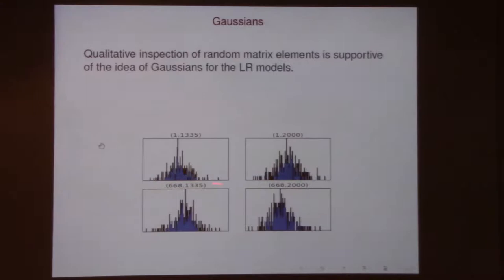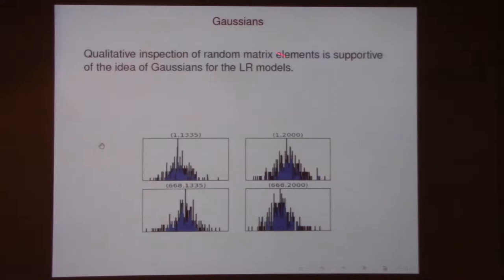Let's say you have matrices of size 2,000 by 2,000. Look at one particular (i,j) matrix entry and look at what values it takes. There's a range of values, a maximum. We convinced ourselves they do look roughly Gaussian. Gaussians are expected quite generally, and we convinced ourselves — for these linear regression models at least — they were approximate Gaussians. So we have two ingredients: Gaussians and permutation symmetry.